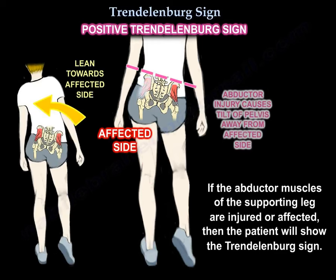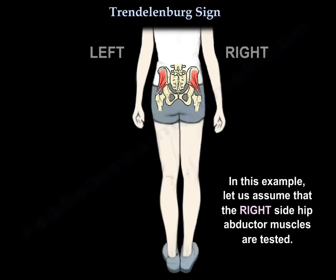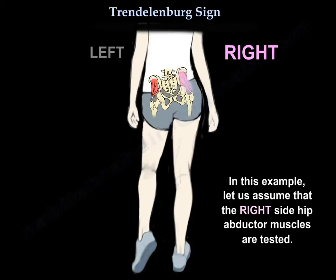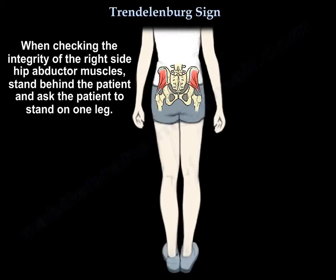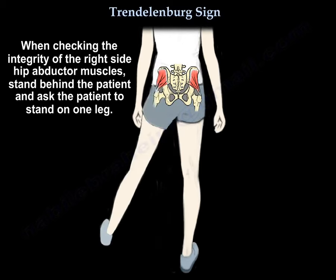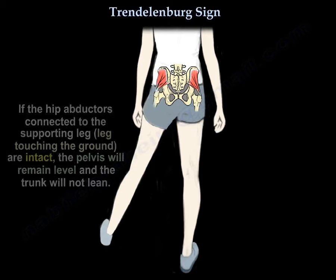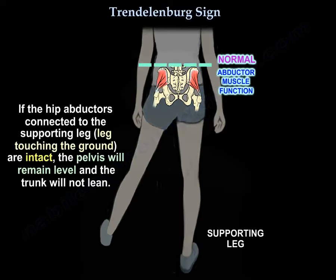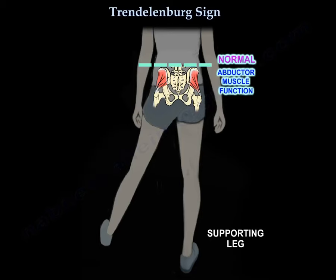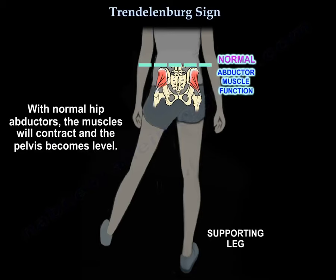If the abductor muscles of the supporting leg are injured or affected, then the patient will show the Trendelenburg sign. When checking the integrity of the right-side hip abductor muscles, stand behind the patient and ask the patient to stand on one leg. If the hip abductors of the supporting leg are intact, the muscles will contract and the pelvis will remain level, and the trunk will not lean.